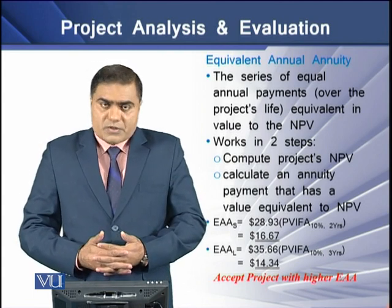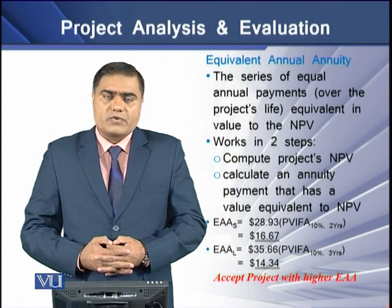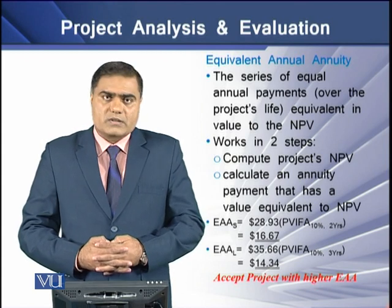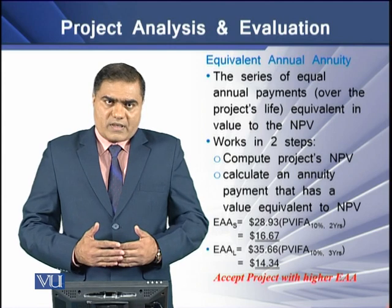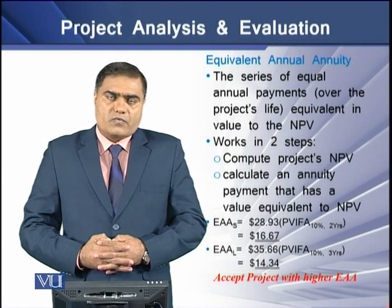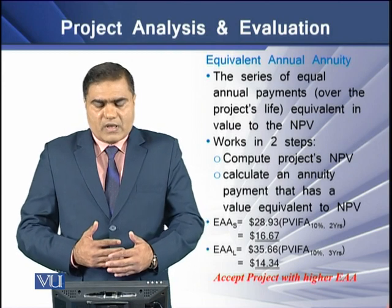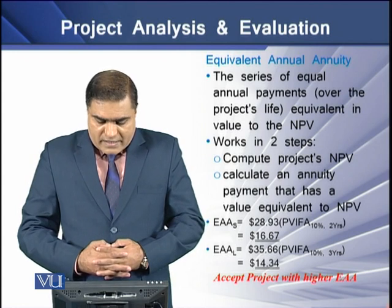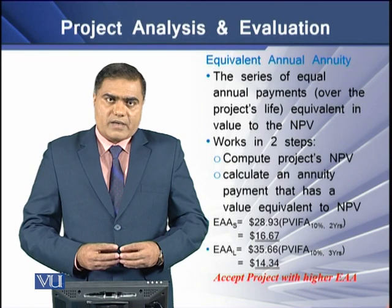Coming to the example: Project S has an NPV of $28.93. If we determine the present value of the annuity of this amount, the EAA is $16.67. For Project L, the NPV is $35.66, and determining the present value annuity of this amount, we come to the figure of $14.34. Now, having analyzed the annuity value of both projects' NPVs, the project with the higher EAA will be selected — and that is Project S.